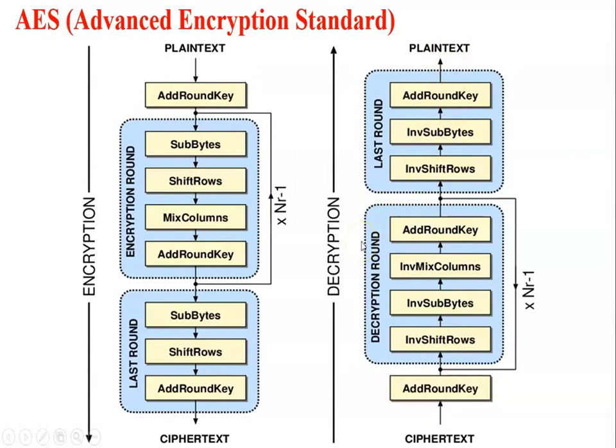The AES decryption process is the inverse of the encryption process. The cipher text is input to the add round key, same as in encryption, and passed through multiple rounds. In the last round, mix column is omitted — same as in encryption. After performing all inverse rounds, the process finally generates the plain text.